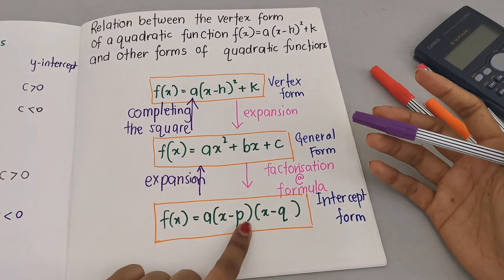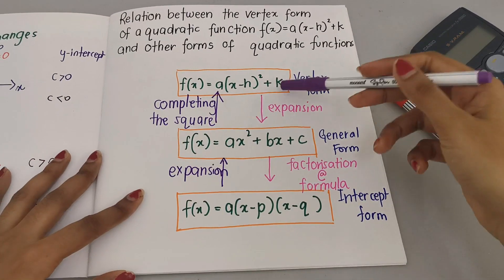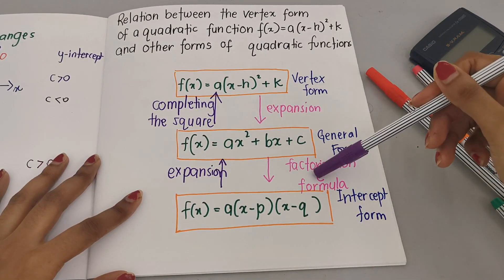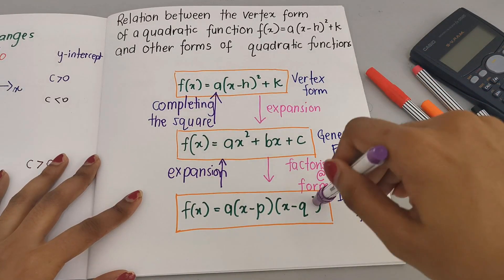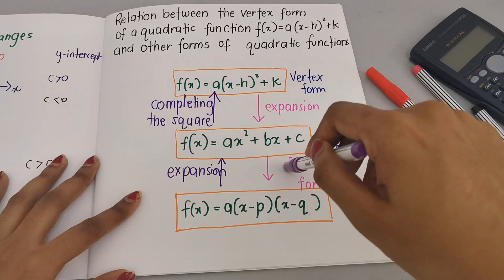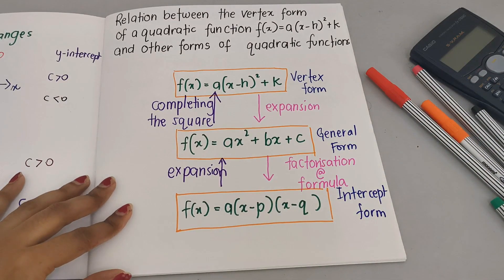After expanding we can factorize and we get intercept form. So we just have to follow the steps one by one, because even though from here to go to intercept, we need to follow the steps in between.